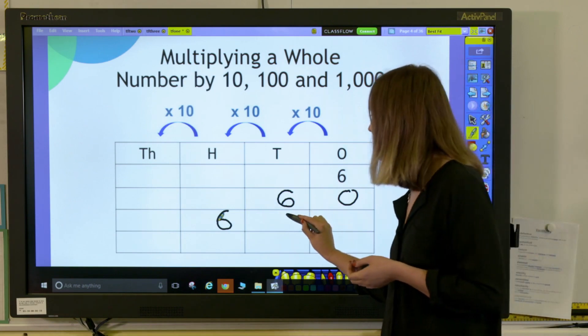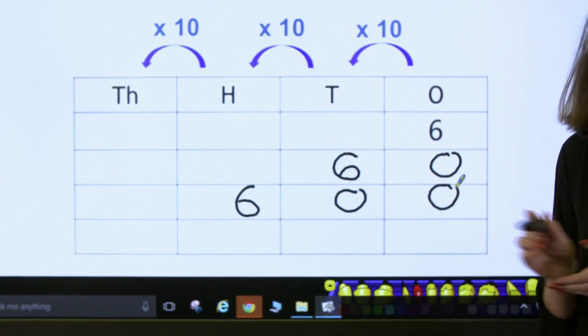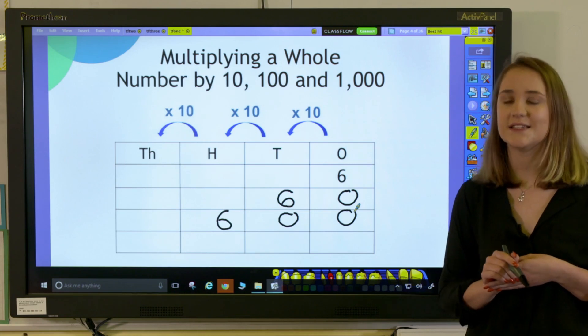Now we need to remember to put in our placeholders. So, 6 multiplied by 100 is 600.